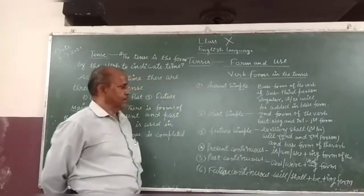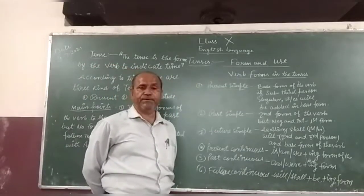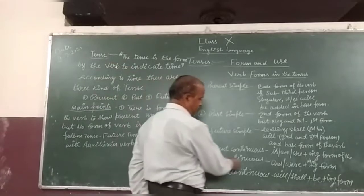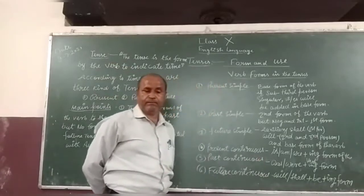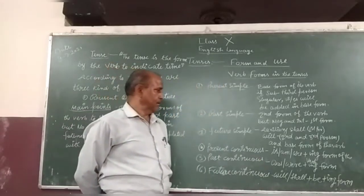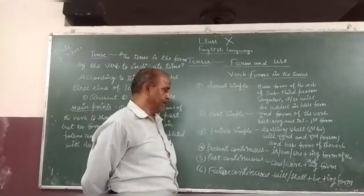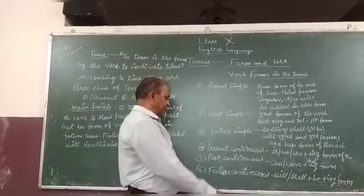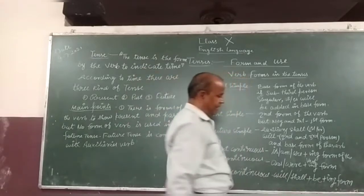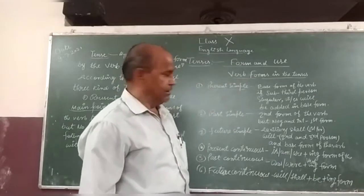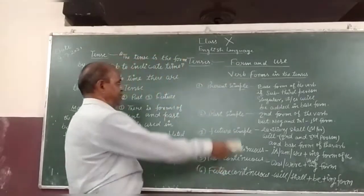It is past present continuous. If there are is and am, the form of the verb with ing. Past continuous: was and were plus ing form of the verb. Future continuous: will and shall plus be plus ing form of the verb.